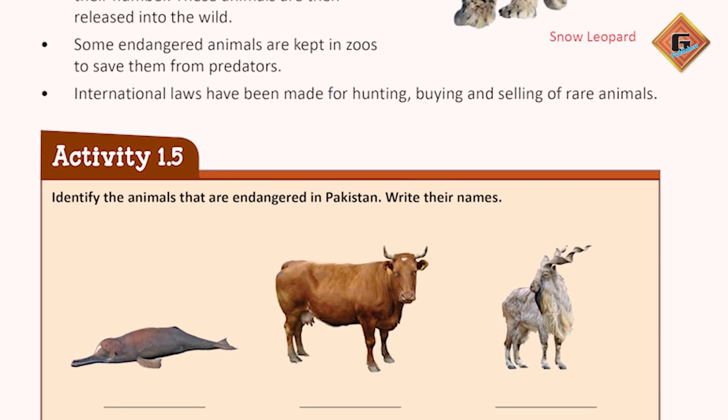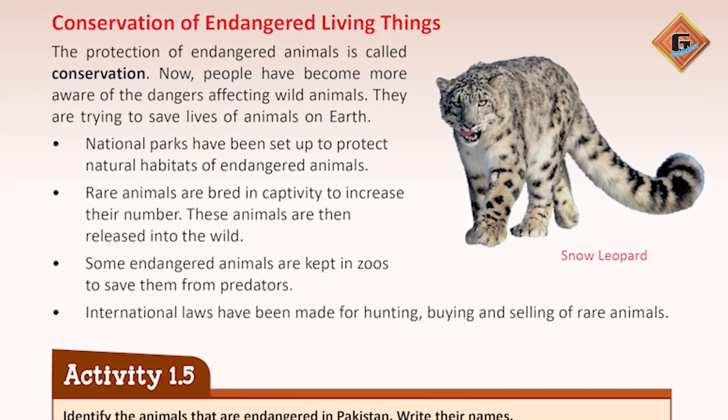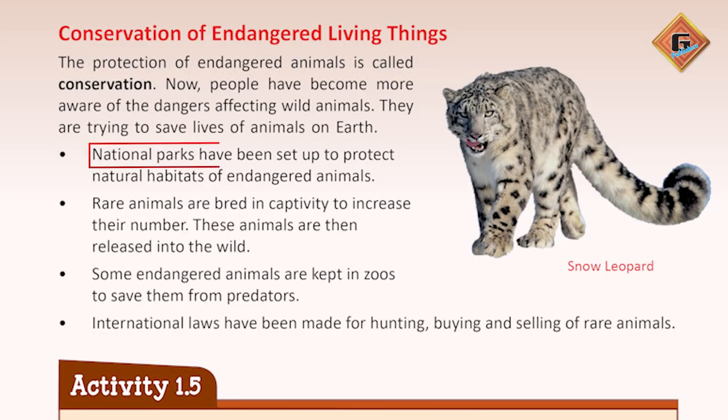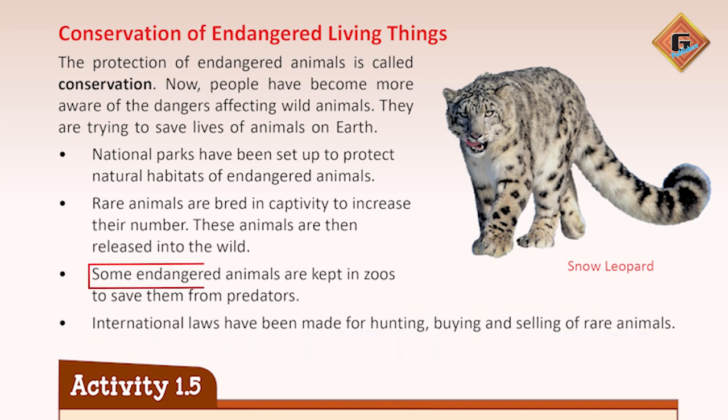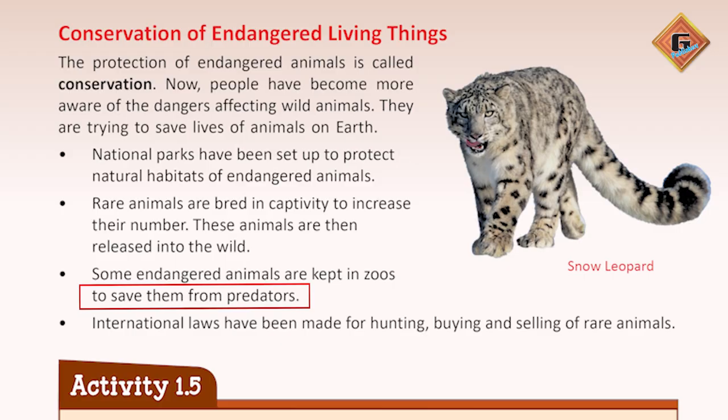We can stop this through conservation of endangered species. Conservation means protection of those species which are endangered. For this, we arrange protective measures: we create national parks, we ban hunting, we ban selling of endangered species, so that they remain protected from the danger of extinction and can survive into the future.